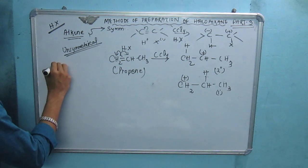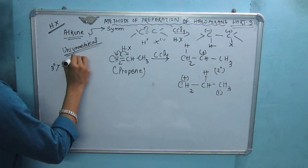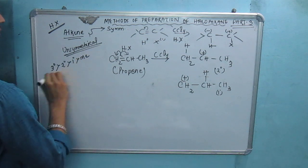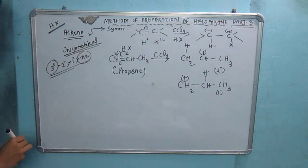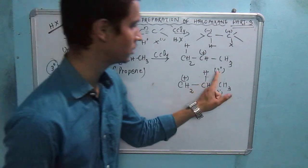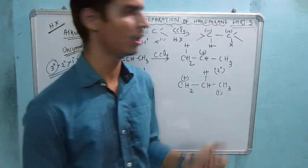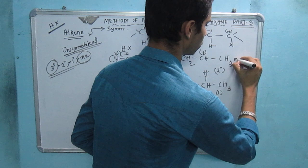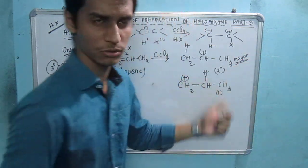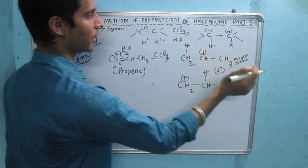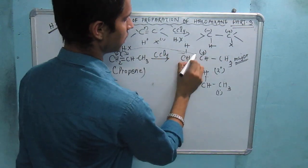The tertiary carbocation is more stable than the secondary, which is more stable than the primary, and then followed by the methyl. So the most stable is the tertiary and the least stable is methyl. Comparing secondary and primary carbocations, the major product comes from the more stable carbocation.